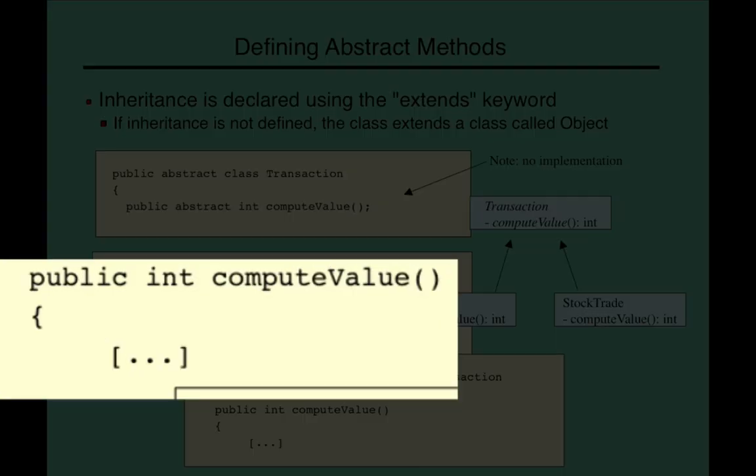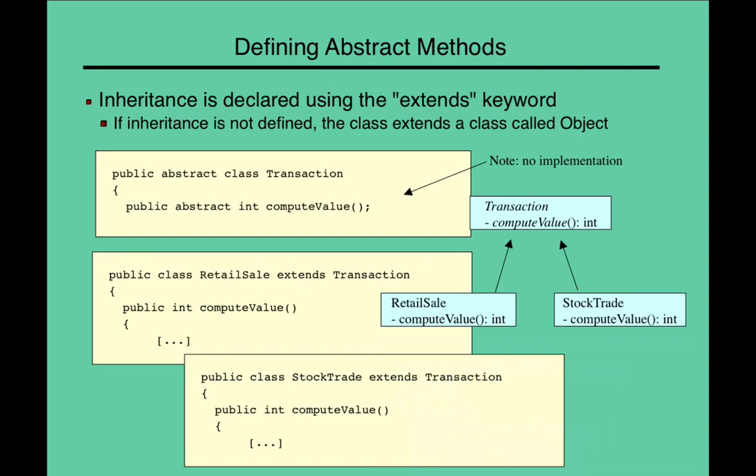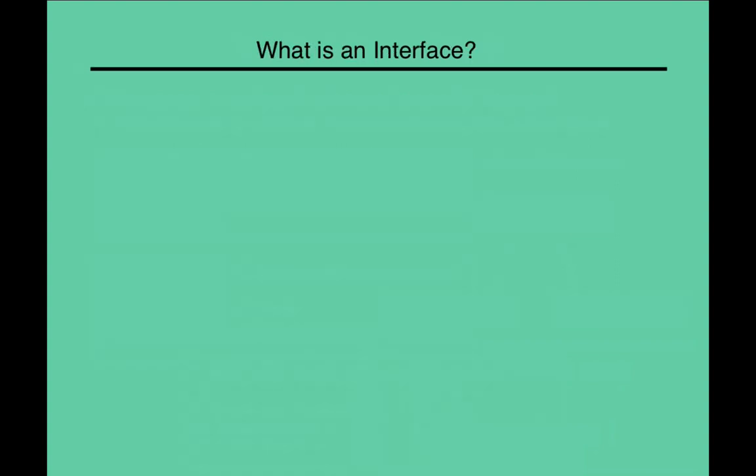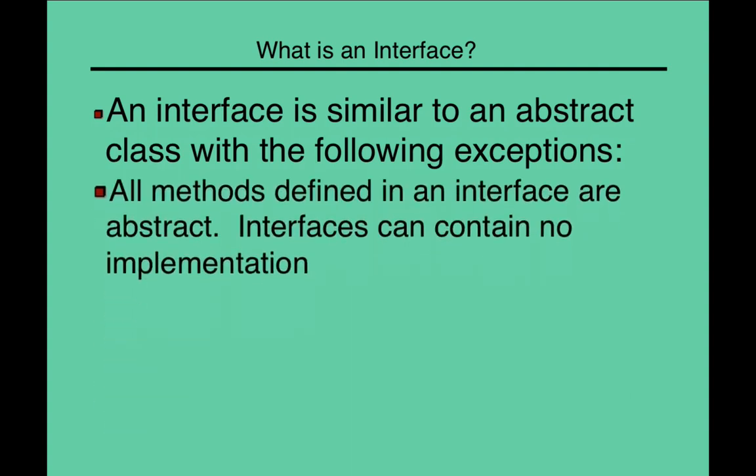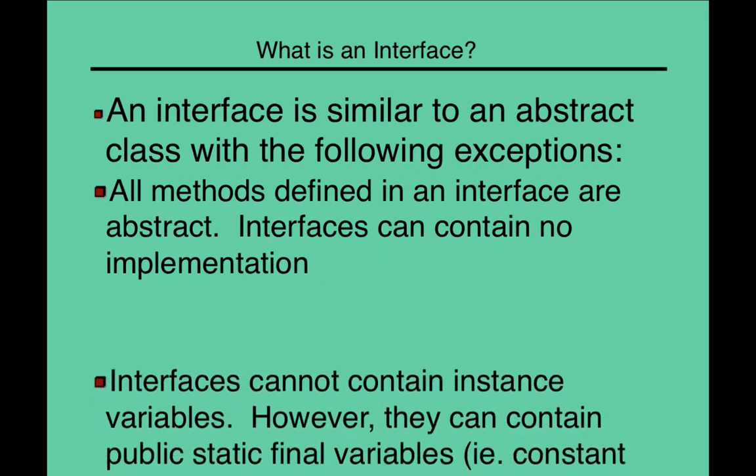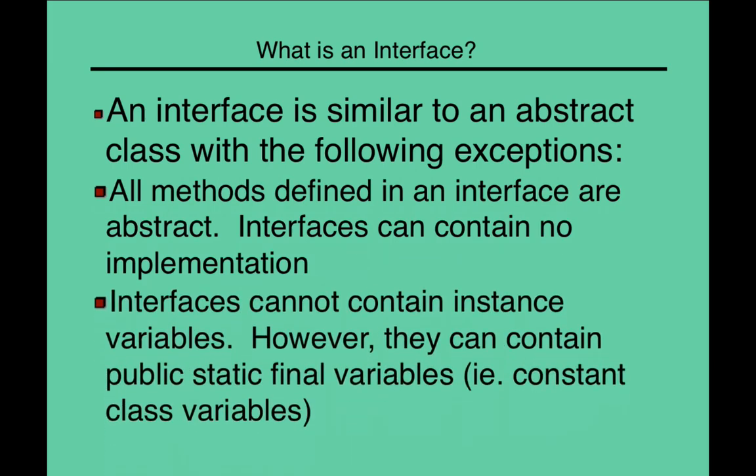An interface is similar to an abstract class, but it's slightly different. An interface has an abstract class, but no implementation whatsoever. We sometimes call it a contract or a design blueprint. So, they can contain some variables, but hardly anything is coded in an interface. It's more of a map forward.